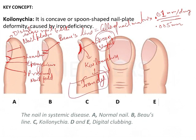Now if you see this particular figure, here you will see the nails with convexity. Generally the nail bed angle is acute, but in this condition the nail bed angle will become too large, and the convex surface of the nail plate will be seen. This particular phenomenon is known as clubbing of the nails. Clubbing is very important, and its causes are very important for exams.